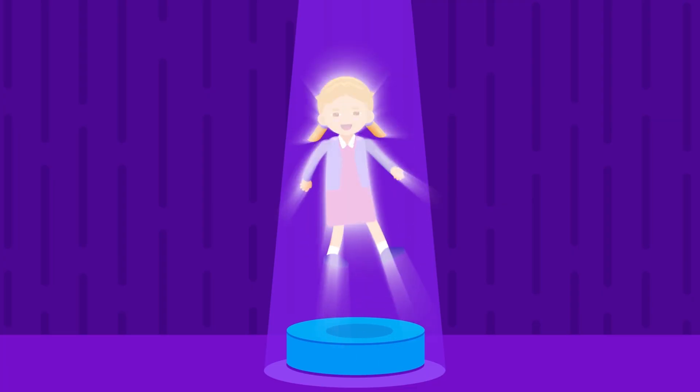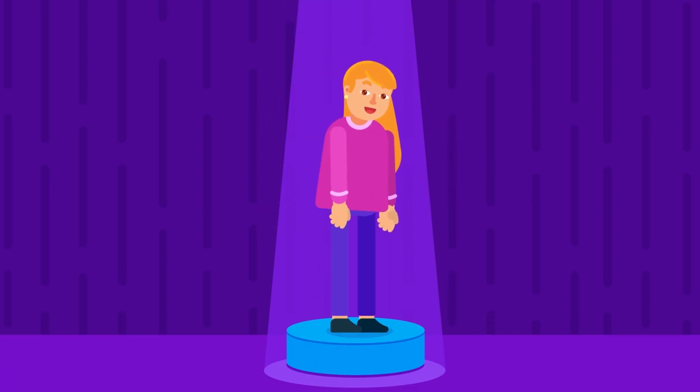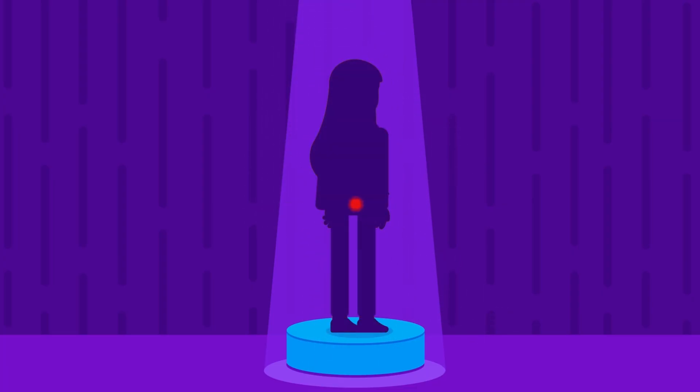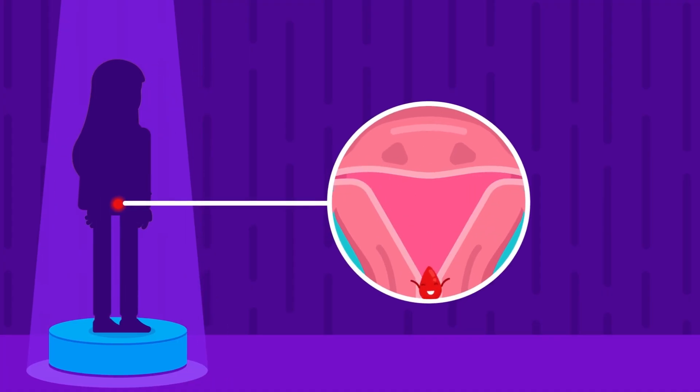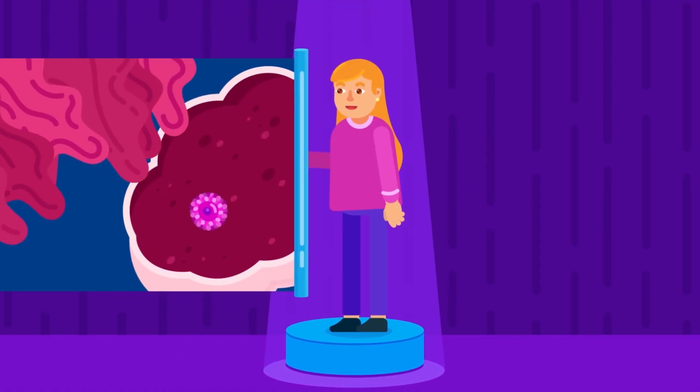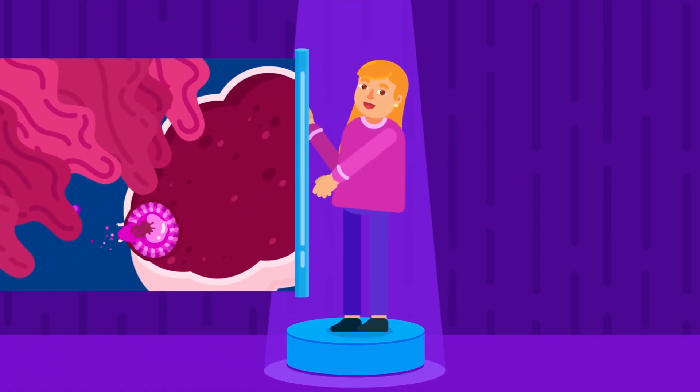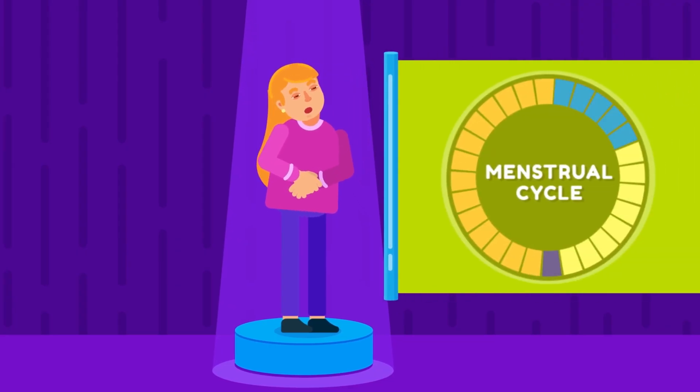For girls, the first sign of hitting puberty is the commencement of a monthly discharge of blood or menses from the uterus via the vagina. Previously, we discussed how the female reproductive system works. Now, we will discuss the steps in a menstrual cycle to understand how the egg develops.